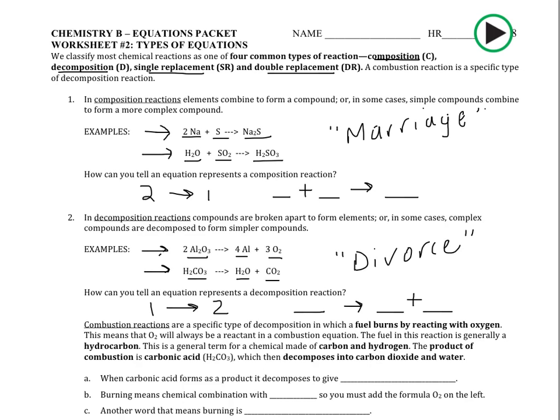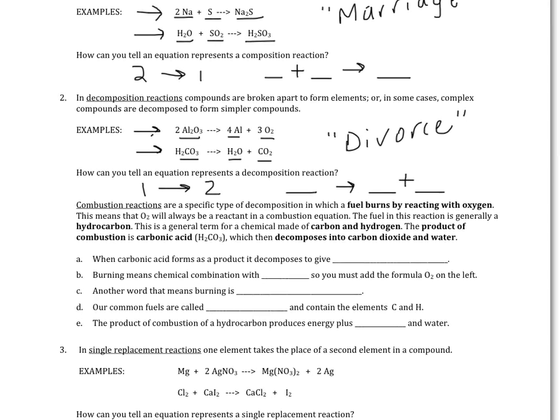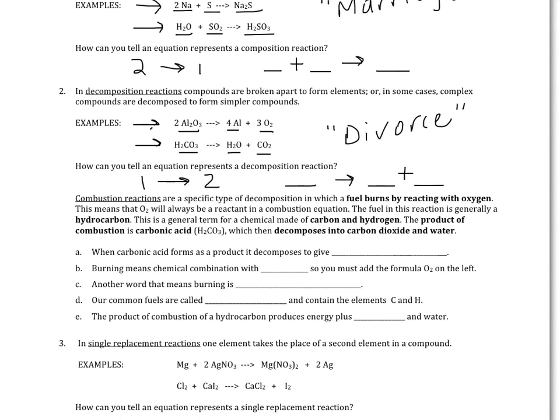A specific type of decomposition reaction that we will emphasize is a combustion reaction. Combustion is just a fancy word for burning, and it's important in our lives because our cars have internal combustion engines — combustion reactions occurring in the car decompose the fuel, generally gasoline, into carbon dioxide and water, while also releasing energy to move the car.